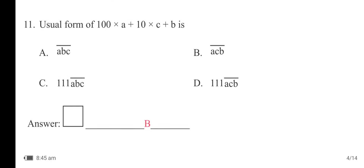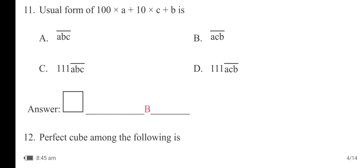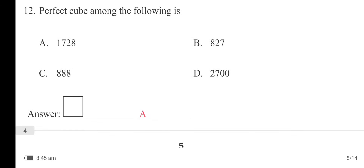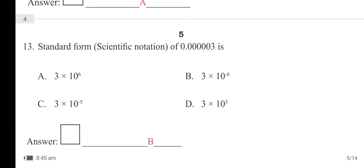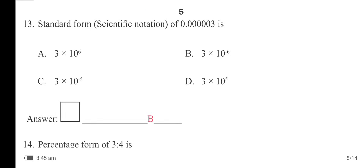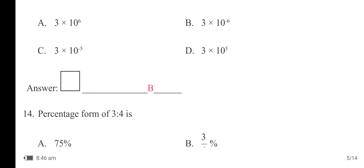The usual form of 100a + 10x + b is option B — ACB. A perfect cube among the following is 1728, which is option A. The standard form (scientific notation) of 0.000003: after the decimal point there are 6 places, so the answer is 3 × 10⁻⁶ — option B is the right answer.